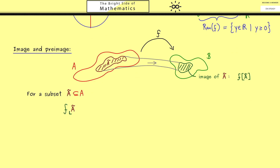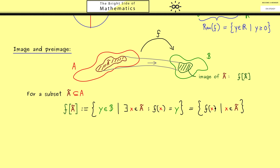For a subset Ã, the image of Ã under f is the set of all points y in B such that there exists an x in Ã with f(x) = y. We can also write this in short form as the set of all f(x) for x in Ã, and it makes sense to use f[Ã] for the whole set. I use brackets here to remind you that the input is a set and not just an element, though parentheses are also commonly used.